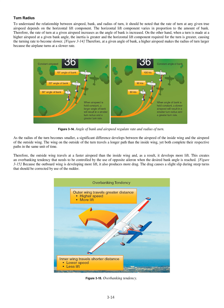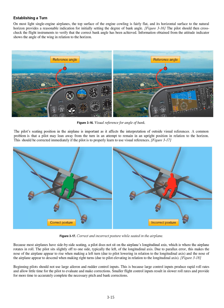Because the outboard wing is developing more lift, it also produces more drag. The drag causes a slight slip during steep turns that should be corrected by use of the rudder. The top surface of the engine cowling is fairly flat, and its horizontal surface to the natural horizon provides a reasonable indication for initially setting the degree of bank angle. The pilot should then cross-check the flight instruments to verify that the correct bank angle has been achieved. Information obtained from the attitude indicator shows the angle of the wing in relation to the horizon.